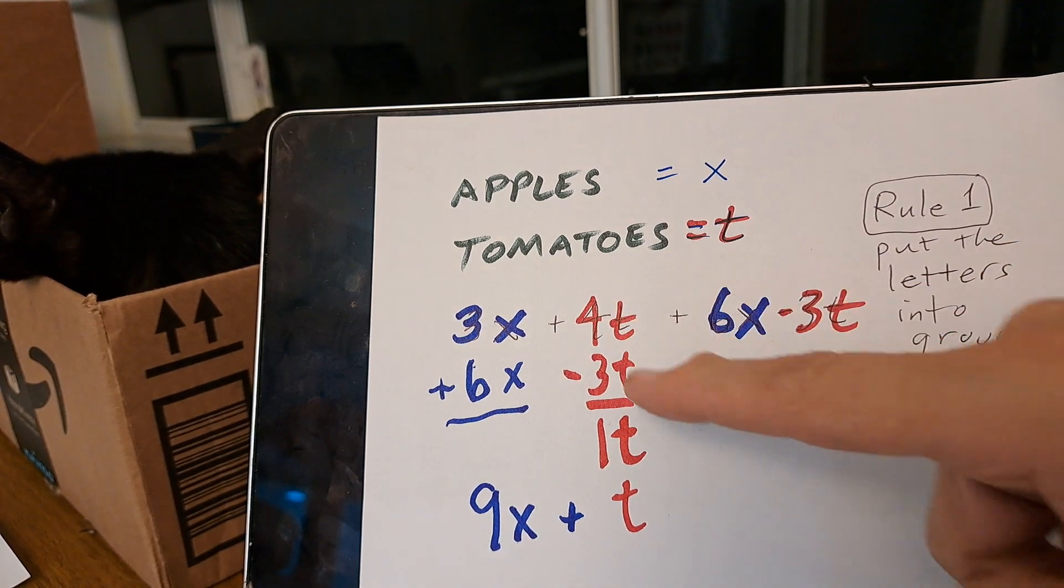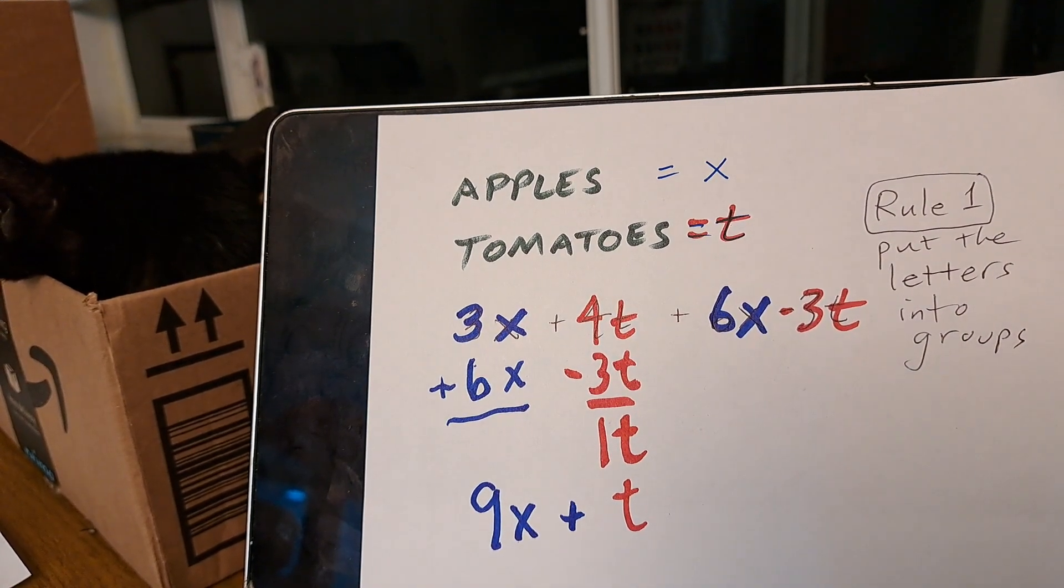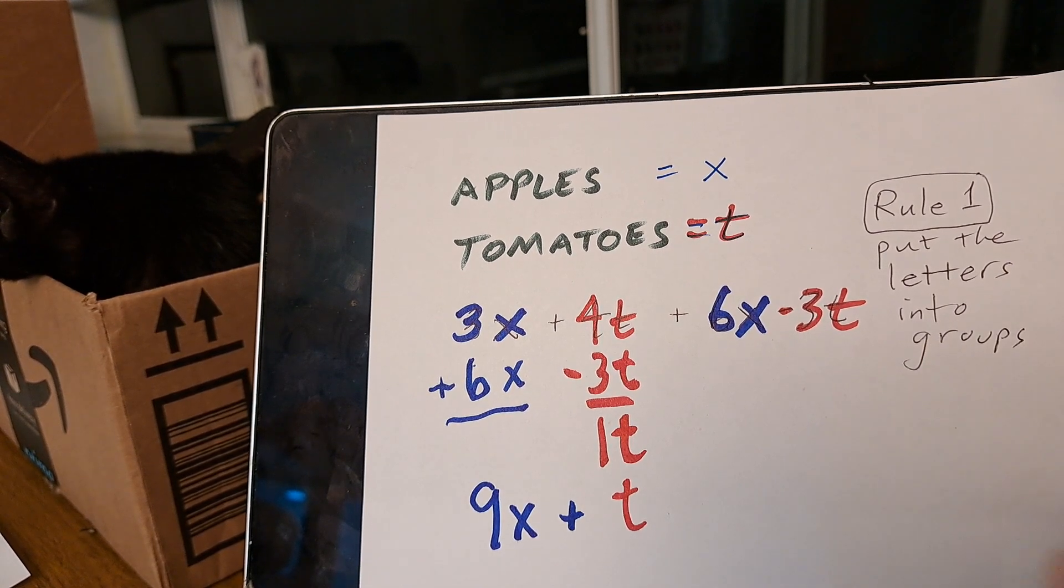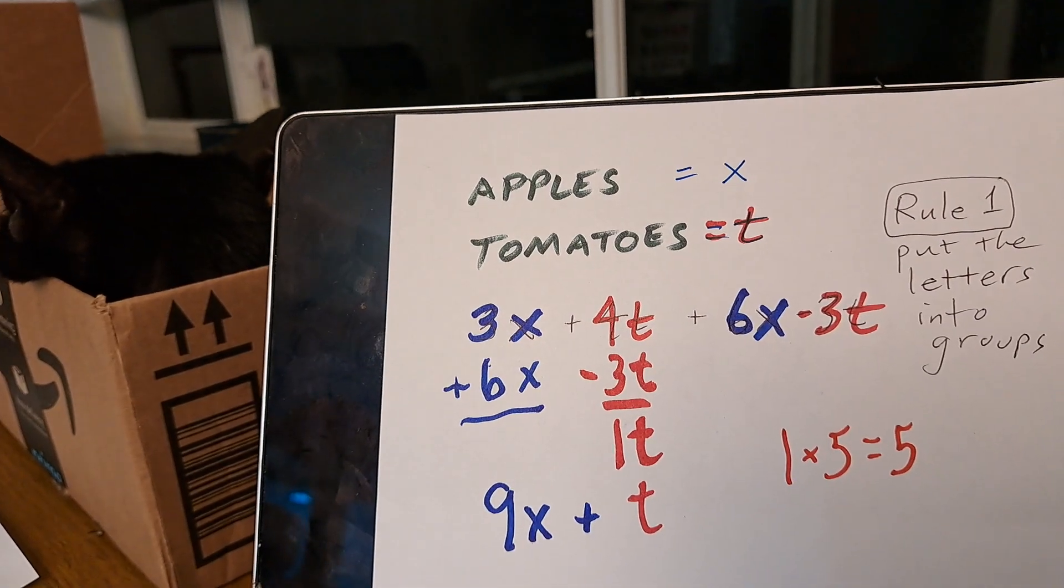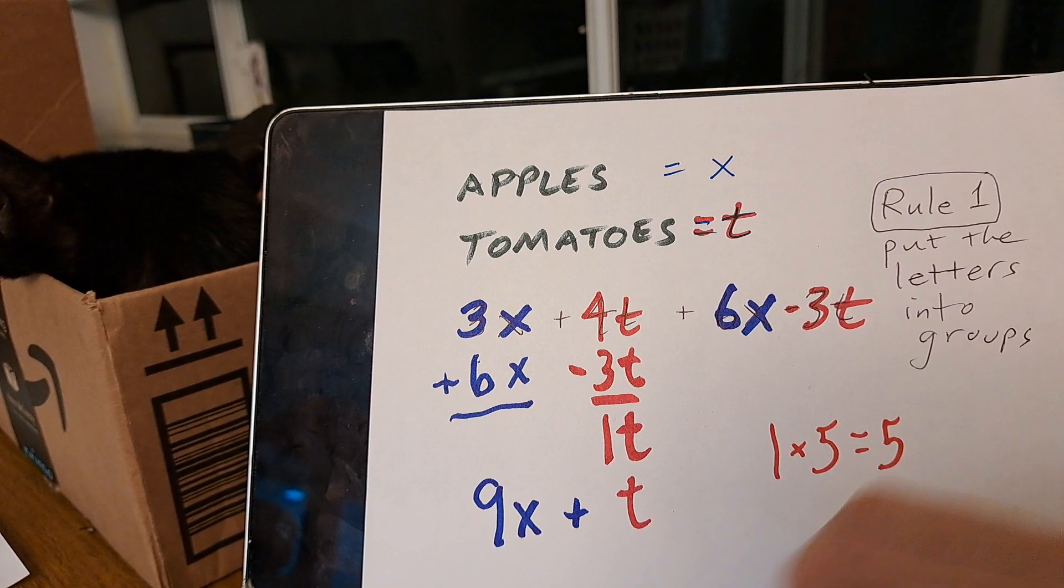On here it's 4 minus 3 and it would be 1. But we know that 1 times anything is the anything. So we can say that 1 times 5 is 5. So 1 times T gives me T.